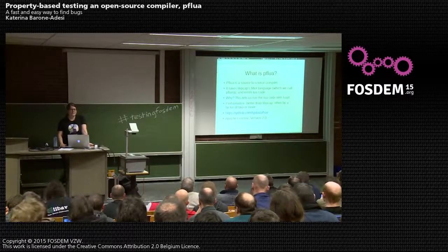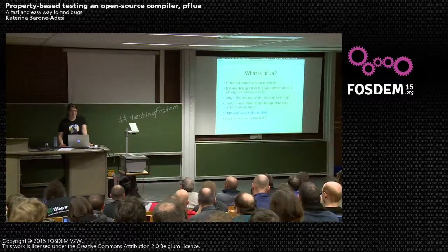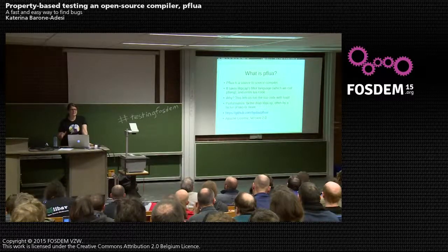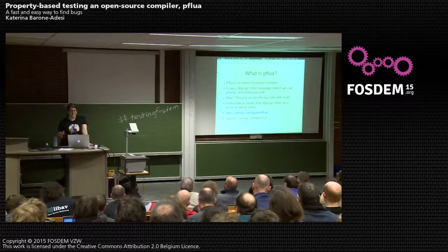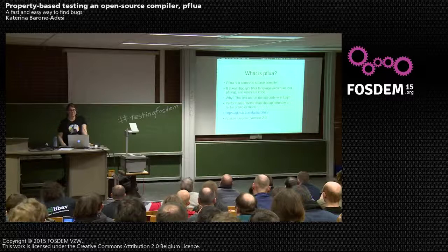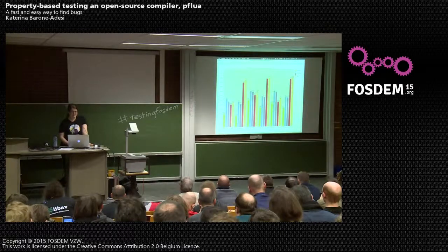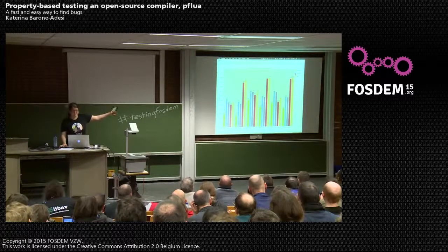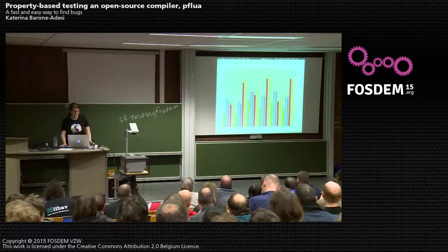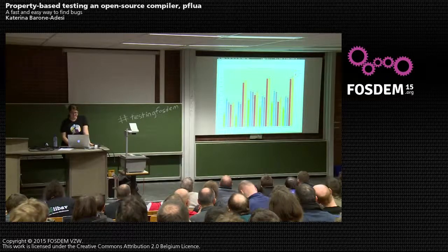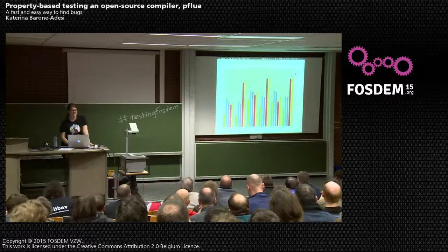The case study for today is what happened when we threw property-based testing at Igalia's compiler, PFLua. PFLua is a source-to-source compiler that takes libpcap's filter language — which at Igalia we call pflang — and emits code in Lua. It does that because it allows us to run the Lua code through LuaJIT, which is a really fast implementation of Lua, giving us both shorter, clearer code than libpcap and much better performance. Here's the performance of libpcap in green versus PFLua in orange on six different filters — PFLua is often around twice as fast or better, and it's also faster than Linux BPF and eBPF.